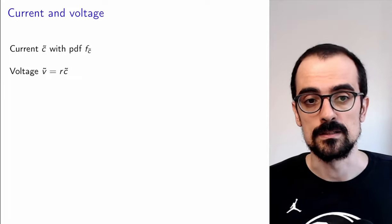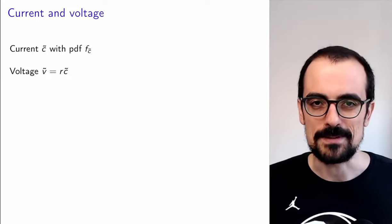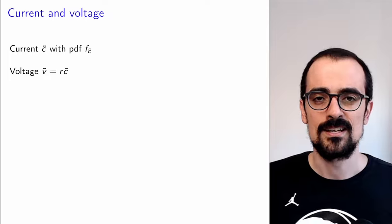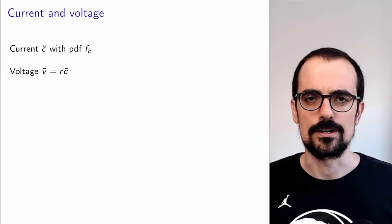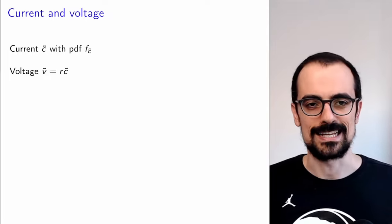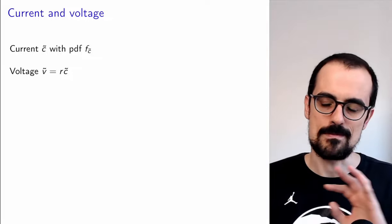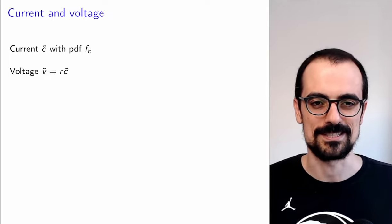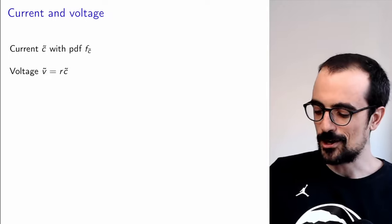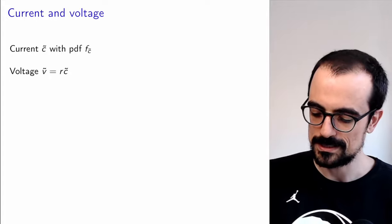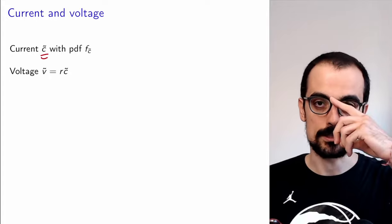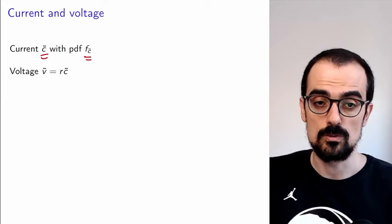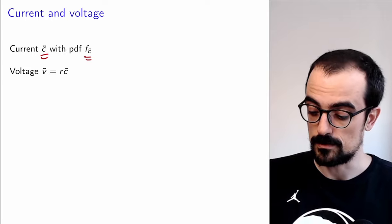Let's take a look at an example. This example is inspired by the fact that I was an electrical engineering undergrad, and I remember essentially one thing: voltage equals resistance times current. Imagine that we have a random variable C that models the current in a certain electric circuit. We know the PDF of the current, but now what we're really interested in is the voltage across a particular resistor. Here, R is a constant representing the resistance of that resistor.